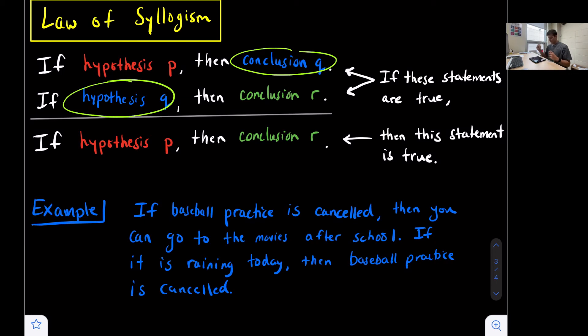So we want to identify Q first. We're going to look at this example. We'll identify Q, and then that will help us identify P and R, which then we can use to write our final statement. So our example, if baseball practice is canceled, then you can go to the movies after school. If it is raining today, then baseball practice is canceled.